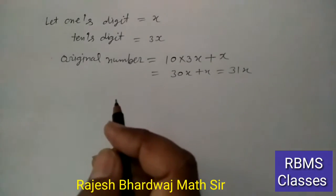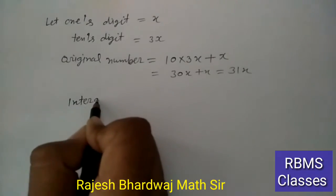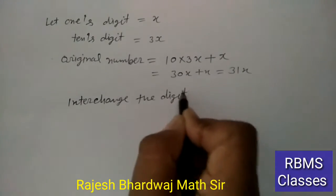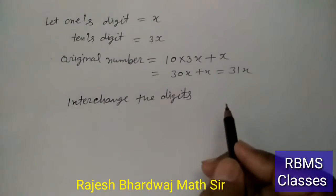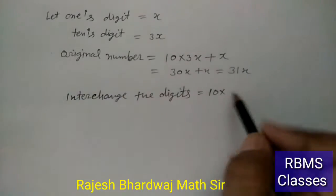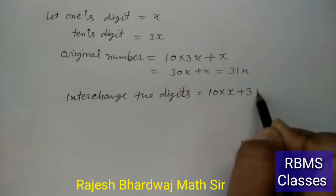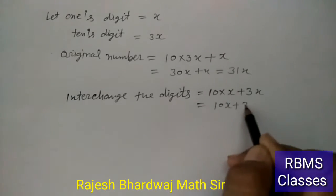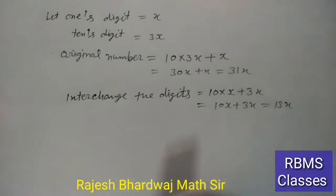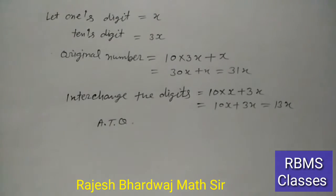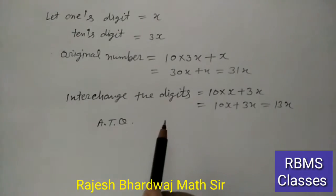अब इसमें interchange the digits करते हैं। जब हम digits को interchange करेंगे तो जो number बनेगा वो: 10 × ones digit + tens digit = 10x + 3x = 13x। ठीक है बच्चों? अब according to question, original number और interchange करने के बाद बने number का sum 88 है।